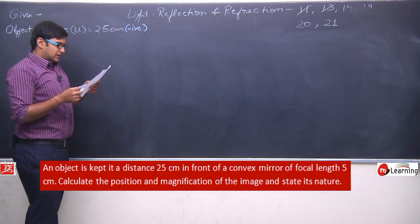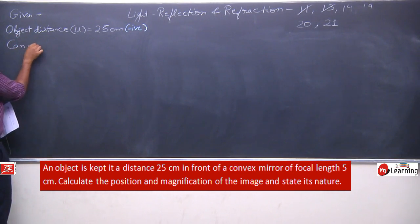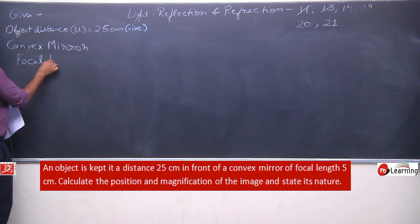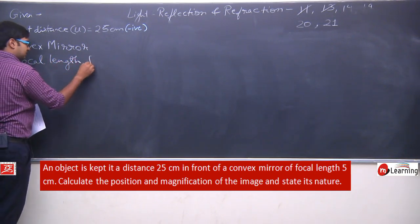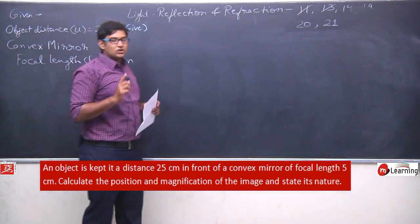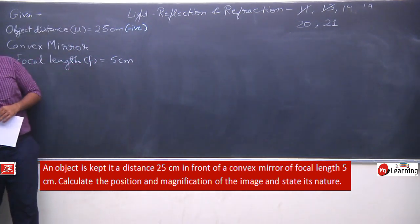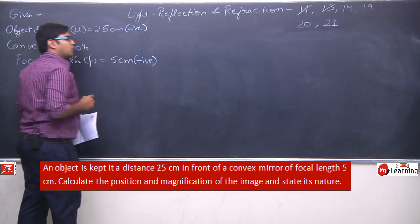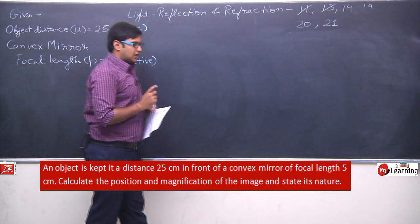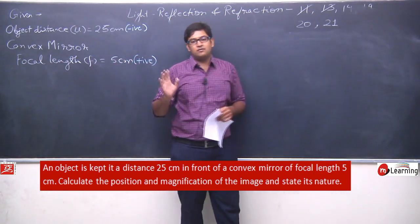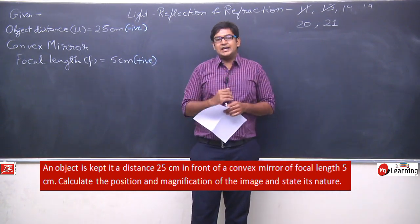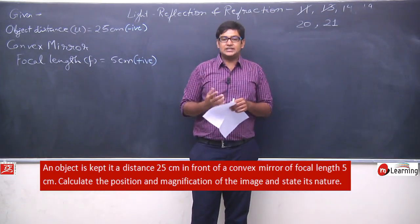Since it is a convex mirror, the focal length will be positive — f = +5 centimeters. In this question, we will try to solve without sketching a ray diagram, applying the formulas directly to find the answer and the nature of the image.